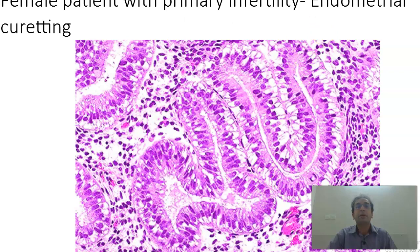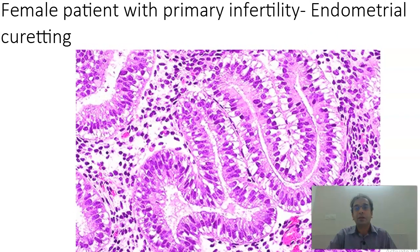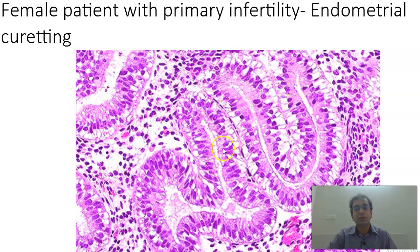Coming to a female patient with history of primary infertility and endometrial curettings. The history of primary infertility is mentioned but you do not find anything abnormal. Usually with that history you would look for granulomas, but here we do not find that. What you find here is subnuclear vacuolations, nice tortuous glands, and edematous stroma. This is a secretory endometrium.